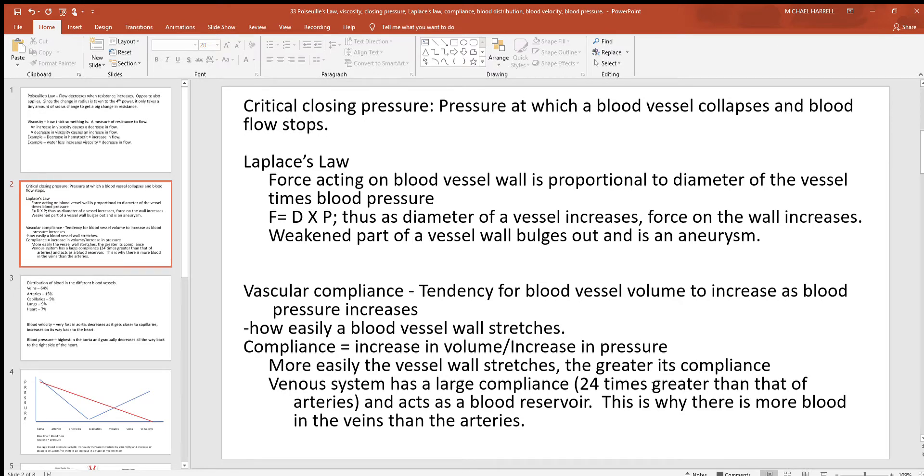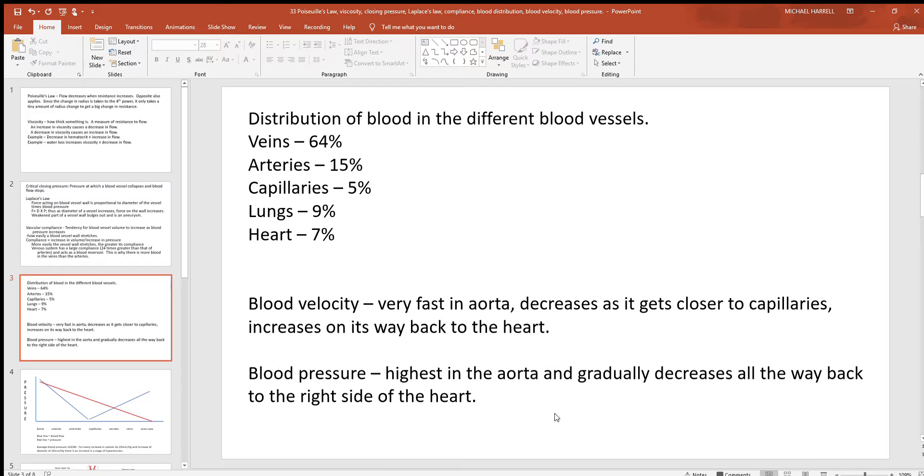And that explains why there's far more blood in your veins at any one time than what you'll see in your arteries. And look at this right here, what you'd find for the average resting adult. Look at how much more of your blood is in your veins than your arteries. It's not even close. What is that? More than four times right there. Again, because their wall stretches very easily, you increase the pressure in them, they stretch and they hold a lot more blood. And there's what you'd also see with capillaries, lungs, and heart.